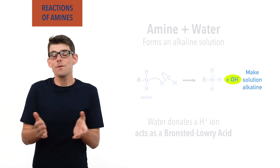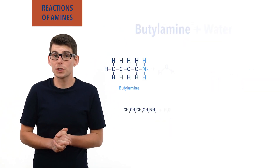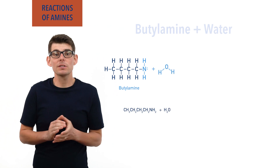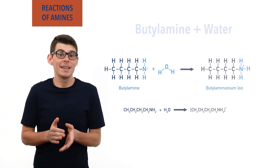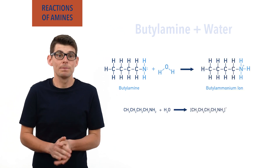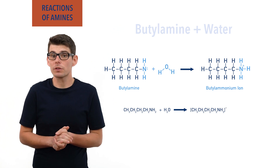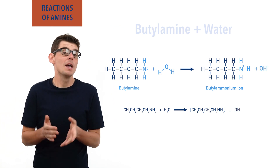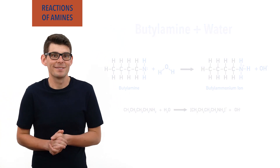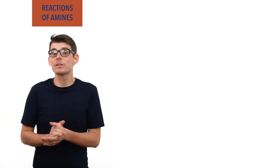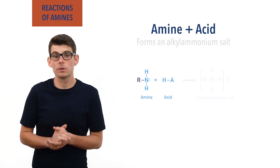The hydroxide ions left behind make the solution alkaline. For example, when butyl amine reacts with water, a positively charged butyl ammonium ion gets formed, and negatively charged hydroxide ions that also get formed make the solution alkaline. Amines reacting with acids form ammonium salts.